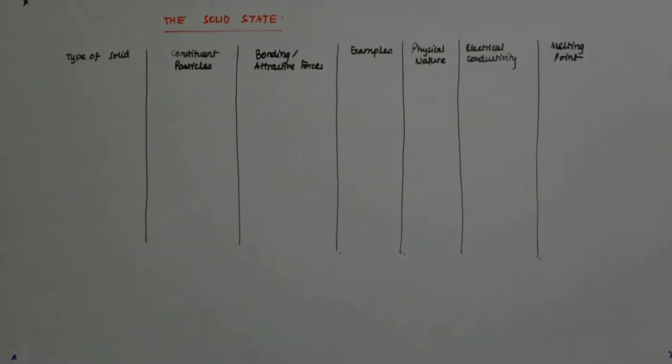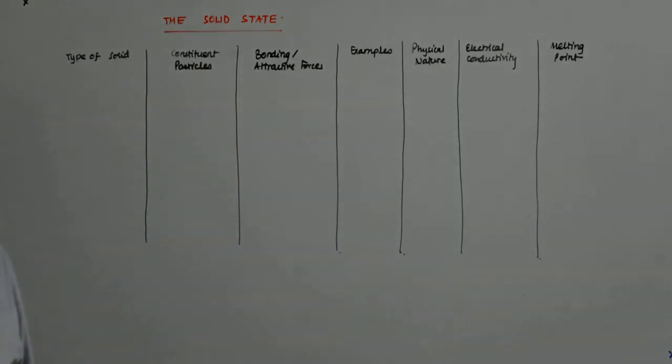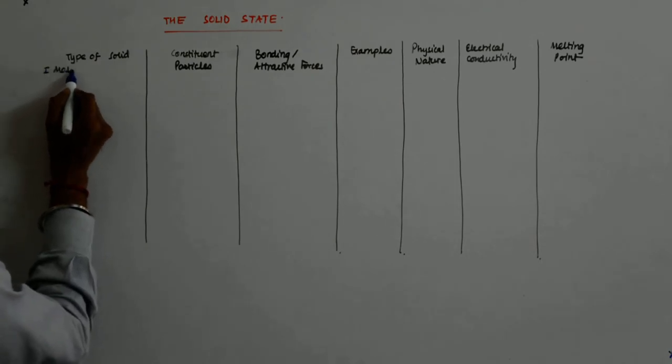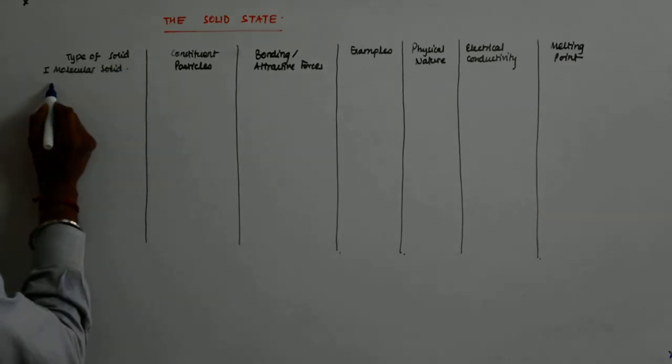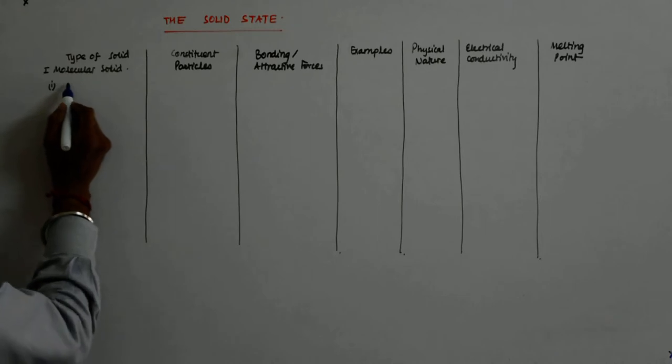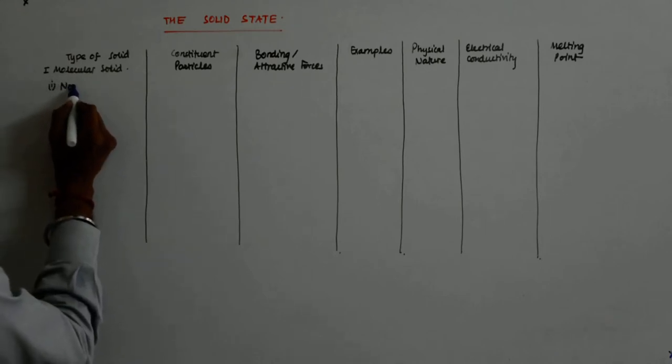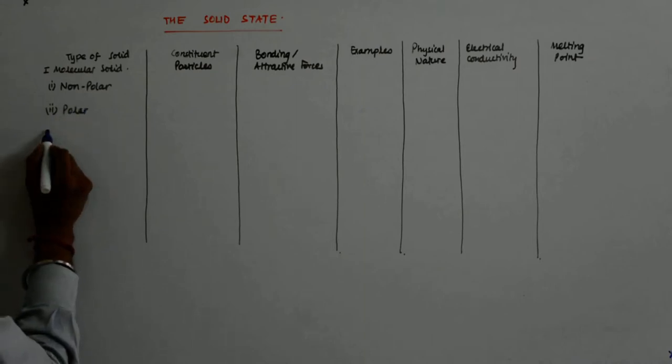So we come to tabulate whatever we have already studied. The first was the molecular solid and out of that the nonpolar. So the first was molecular solid that was divided into three. First is nonpolar, then we have polar,